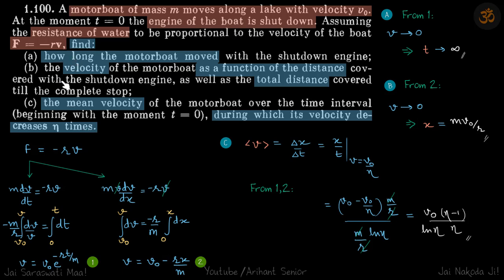So in part a, how long it moves total time. When it stops, velocity will be zero. So if you put v is equal to zero, that means t is equal to infinity, so it will eventually stop at infinite time.